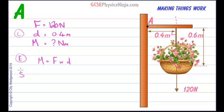Let's put the numbers in and solve this equation. So M equals 120 times by 0.4 which will give us 48. That's our moment. And let's state the answer, 48 newton meters. That's the unit for the turning effect or moment.